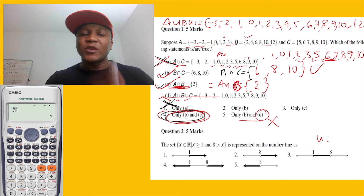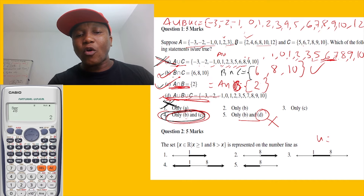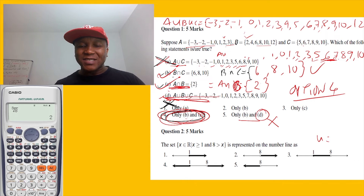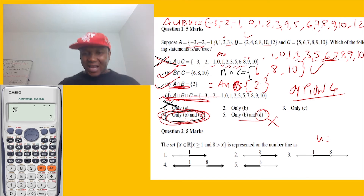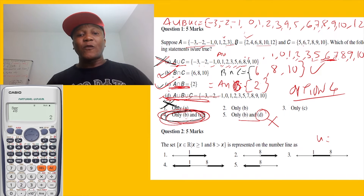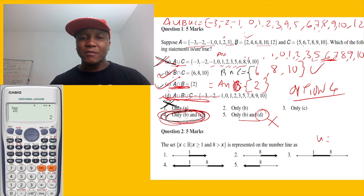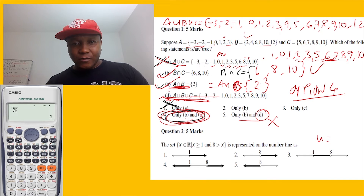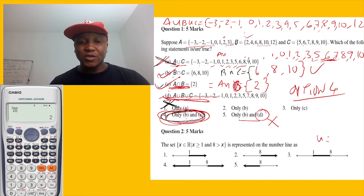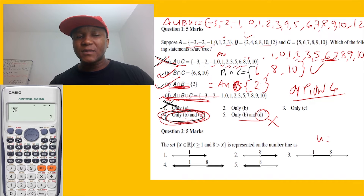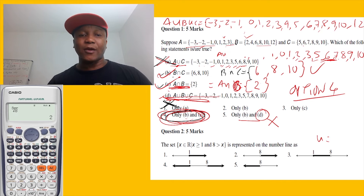So the answer for this question is B and C. Sorry for making a mistake — you saw that I made one, but that's how learning works. Let me do the next question quickly.